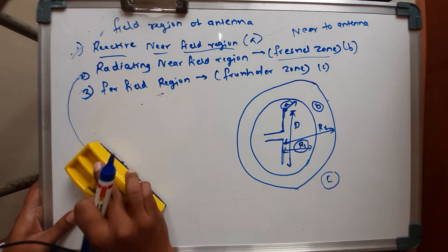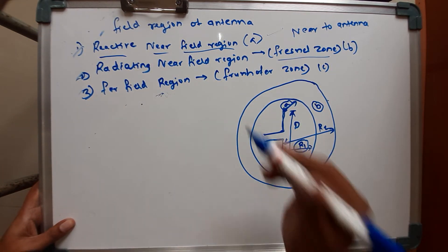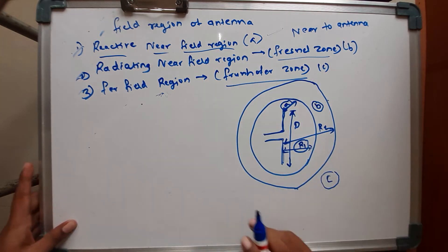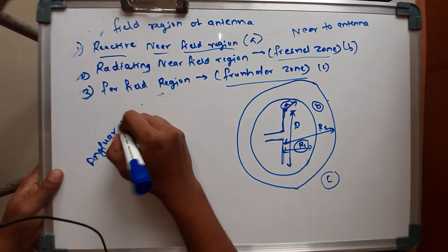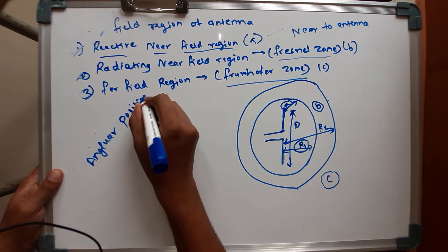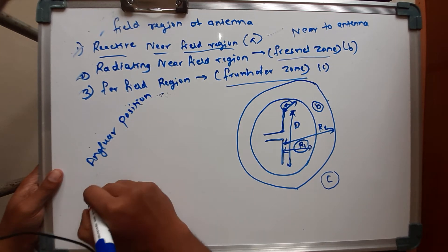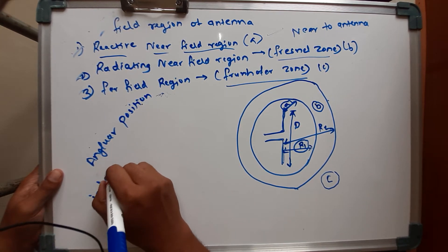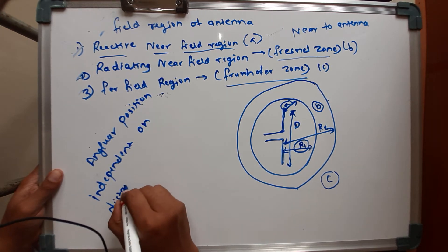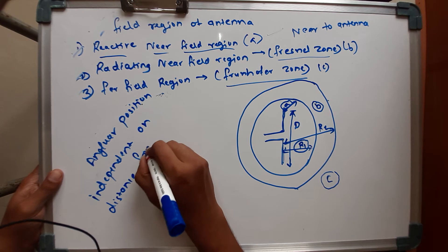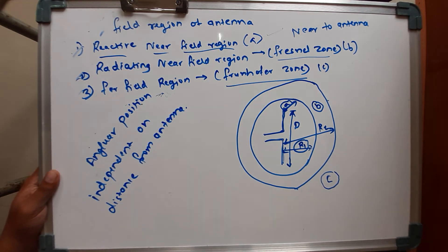For the third region C, called the far field region or Fraunhofer zone, the angular position does not depend on — or is independent of — the distance from the antenna.